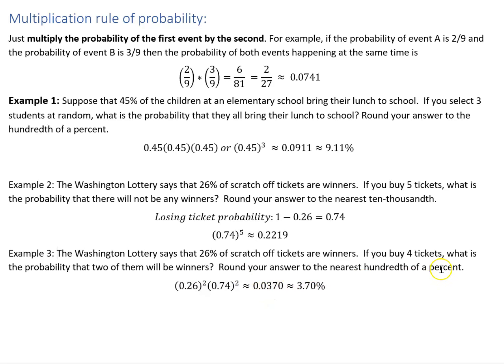Again, to the nearest hundredth of a percent, if I move that over two places, I get 3.70%. So if you bought four tickets, you'd only see half of those be winners less than 4% of the time. All right, have a fantastic day.